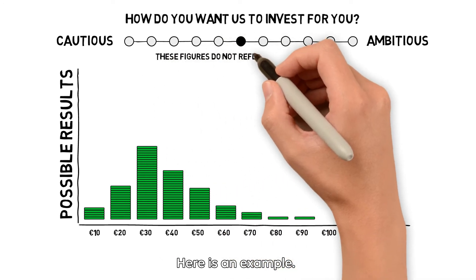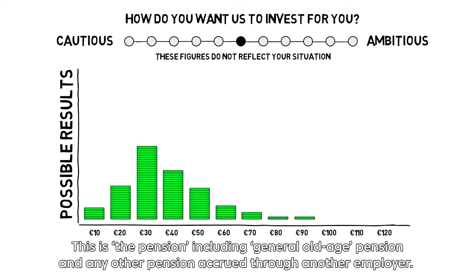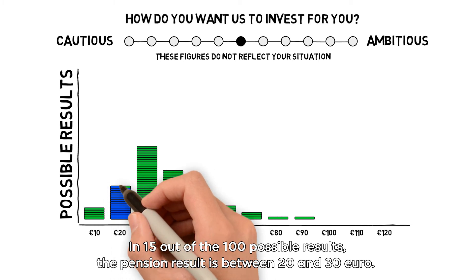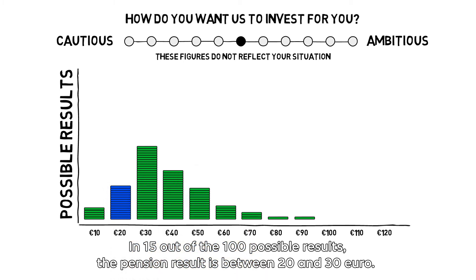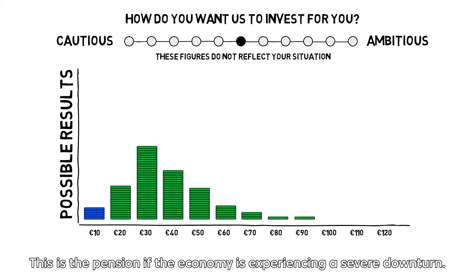Here is an example. These 100 slices represent 100 possible results. The pension results are dependent on the future development of the economy. In 15 out of the 100 possible results, the pension result is between 20 and 30 euro. In five out of the 100 possible results, it is 10 euro or lower — this is the pension if the economy is experiencing a severe downturn.